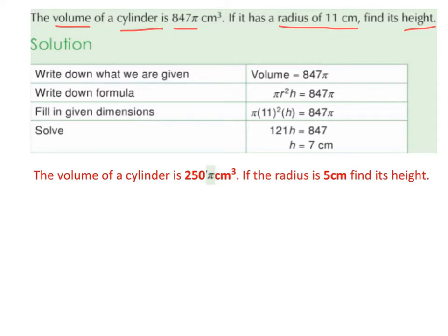Then we fill in the given dimensions. The radius is 11, we were told that in the question, so we swap the r for 11 with brackets around it. We don't know what the height is and we keep the π as it is. This is still equal to 847π.